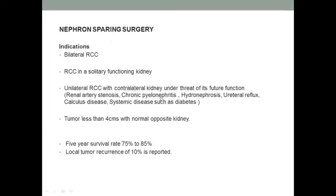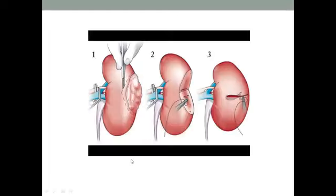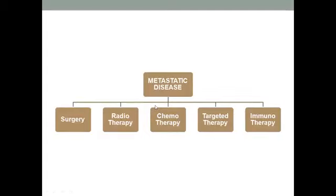Nephron-sparing surgery is also indicated for unilateral RCC where the contralateral kidney is unlikely to function well in the future — such as in patients with renal artery stenosis, pyelonephritis, hydronephrosis, reflux disease, calculus disease, diabetes — or when the tumor is less than 4 cm with a normal contralateral kidney. The five-year survival rate can be 75 to 85 percent, but with a definite local tumor recurrence risk of 10 percent.